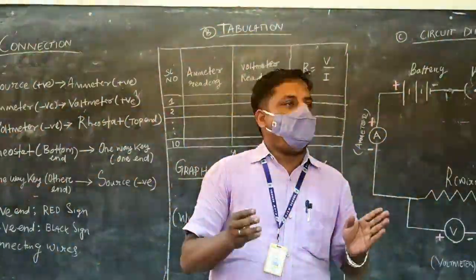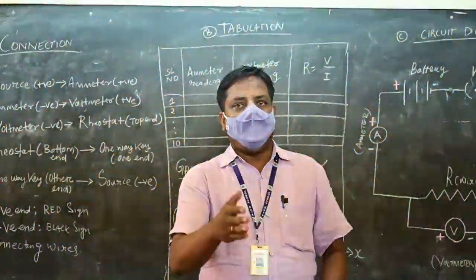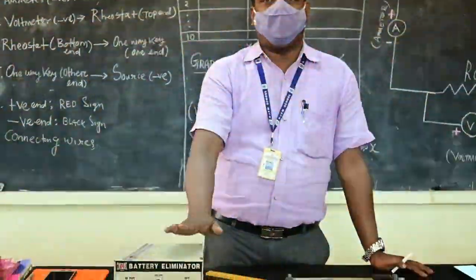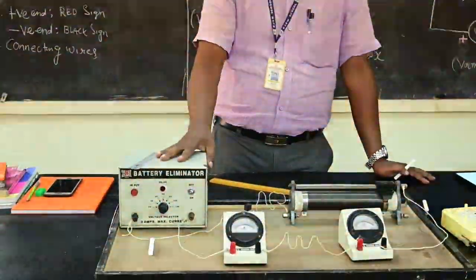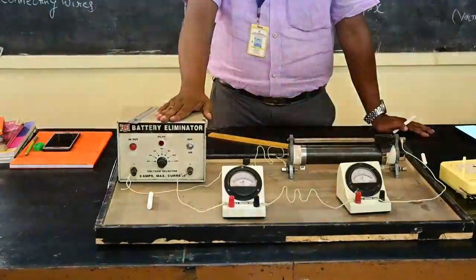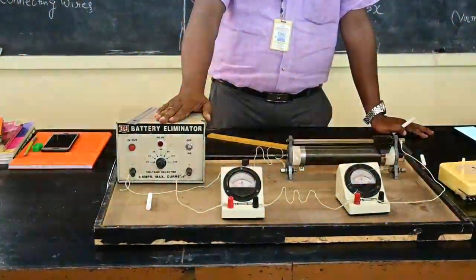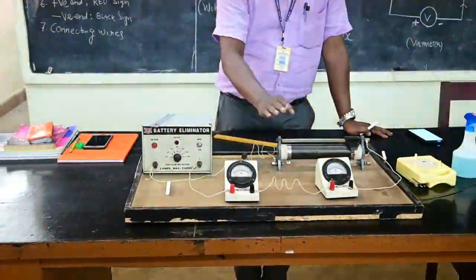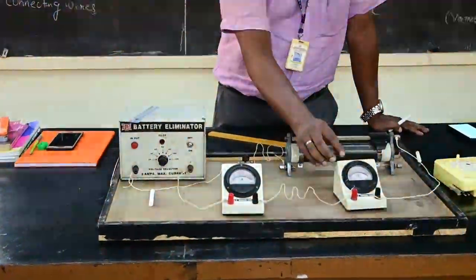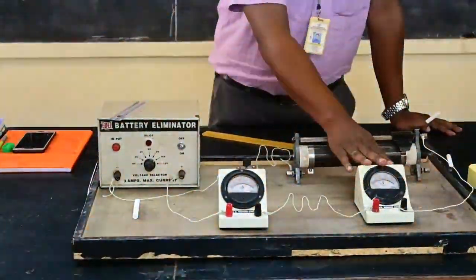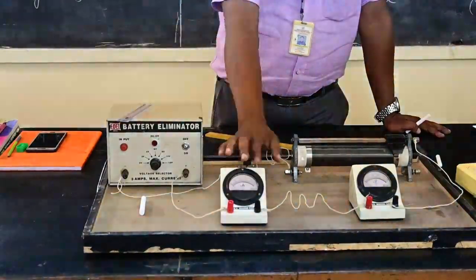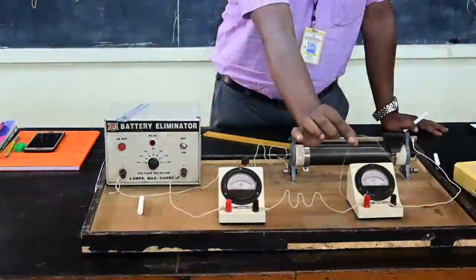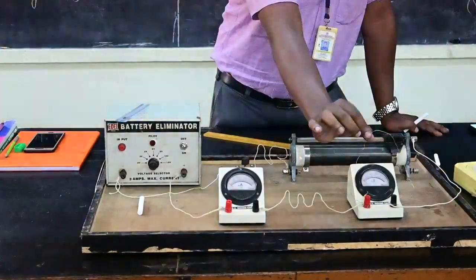That means we will be taking the instruments. You can see the instruments here. This is the battery eliminator — that is your source. This is the key. This is the rheostat. This is the voltmeter. This is the ammeter. And this is the wire whose resistivity is to be calculated.